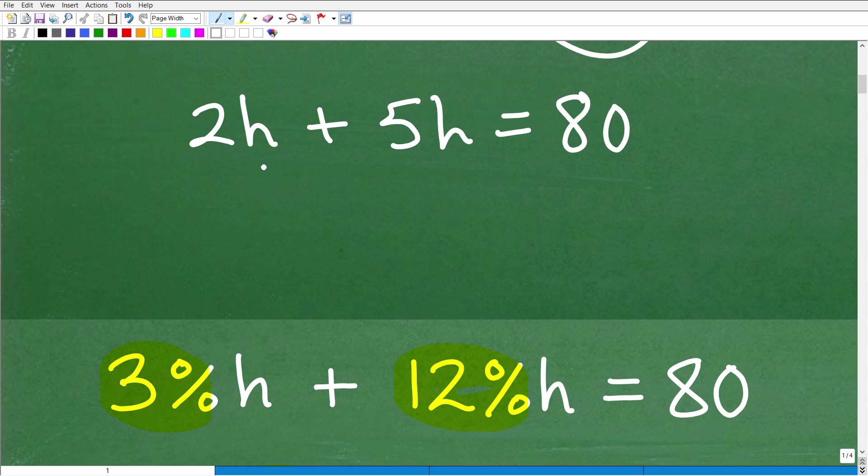Let's say I had 2h plus 5h is equal to 80. So this is an h and this is an h. These are what we call like terms in algebra because we have the same variable to the same power. These are exactly the same, which means that we can add these like terms. And how do we add like terms? We just simply add the numbers in front of those variables. These things are called the coefficients. So these two combined would just be if I have 2hs here and 5hs here, I have a total of 7hs.